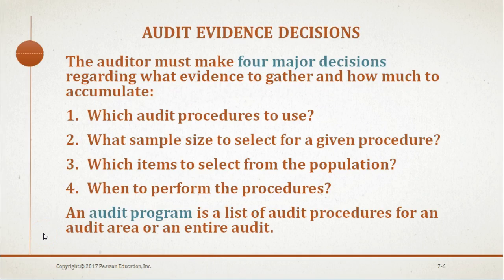There are four major decisions the auditor must make regarding what evidence to gather and how much to accumulate. These decisions are: which audit procedures to use, what sample size to select for a given procedure, which items to select from the population, and when to perform the procedures.